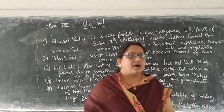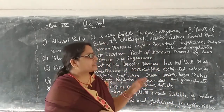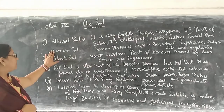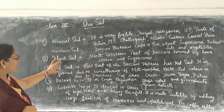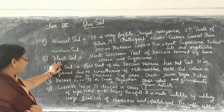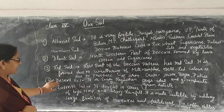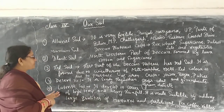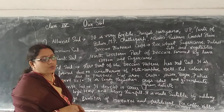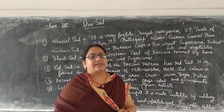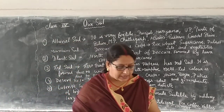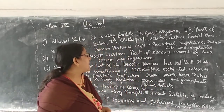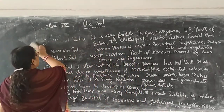So, you have understood the six types of soil: alluvial soil, mountain soil, black soil, red soil, desert soil, and laterite soil. The next important topic is soil erosion.